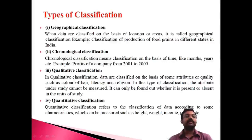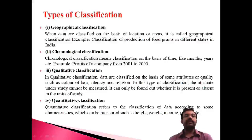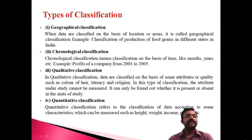Data classified on the basis of location or area is known as geographical classification. The second type is chronological classification, which is based on time — this classification is done on the basis of time such as months or years. For example, the profit of a company from 2001 to 2005 represents different periods of time, and that classification is known as chronological classification.